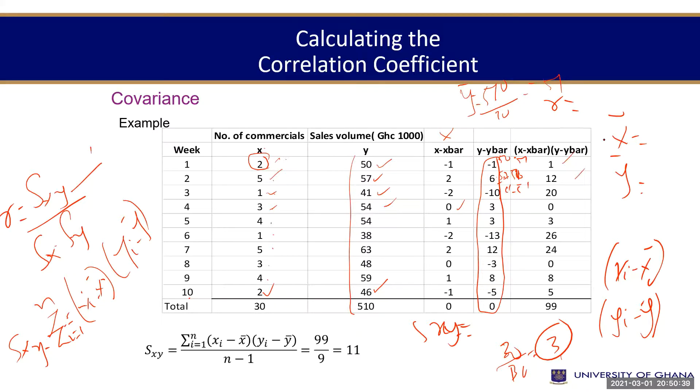Minus 1 times minus 1 will give you 1. 2 times 6 will give you 12. This, I hope you know negative times negative is positive. This will give you 20. This will give you 0. This is 3. This is 26. This is 24. Then, this will also give you 0. This will give you 8. So, the sum of all that, that is what this guy is saying, the numerator. The denominator is N minus 1. So, 99, as we have here, is 10. This is 10 minus 1. So, our covariance between X and Y is 11. We've estimated that everything for the numerator here.